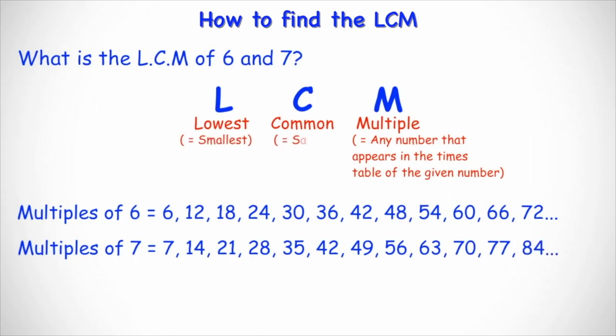Lowest means the smallest and common means the same. So lowest common multiple effectively means what is the smallest number appearing in the times tables for the given numbers that is the same, or what is the first number appearing in the times tables that is the same.